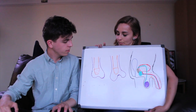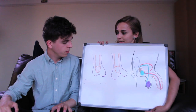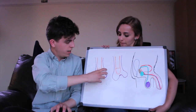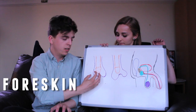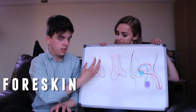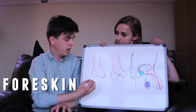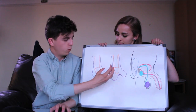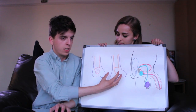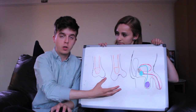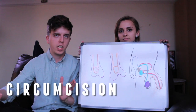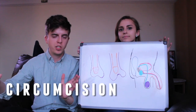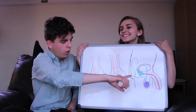What's the difference between these two penises? One has more foreskin over the tip of the penis and one does not, because it has been circumcised. Circumcision is a common thing in America and some religions.